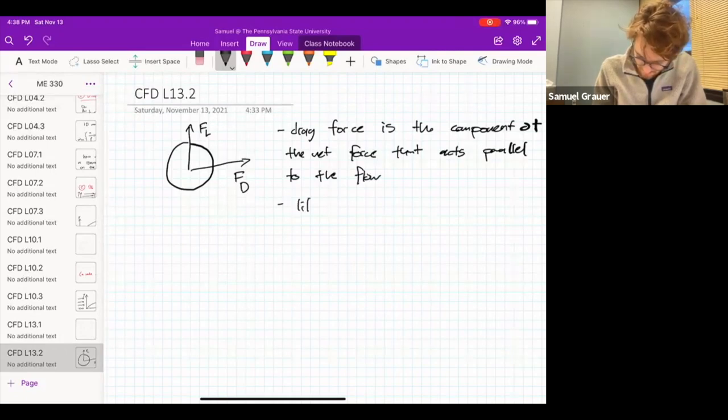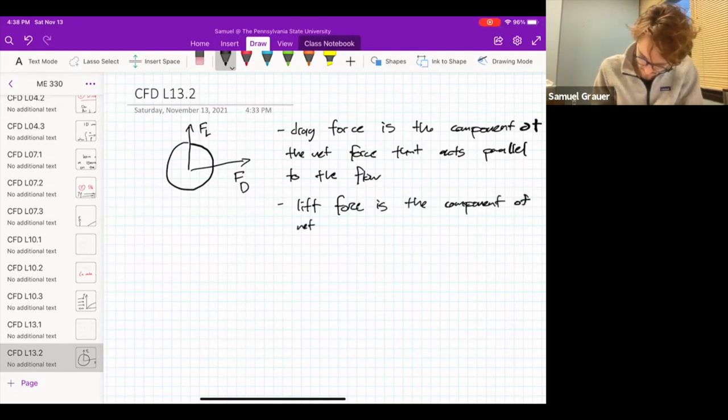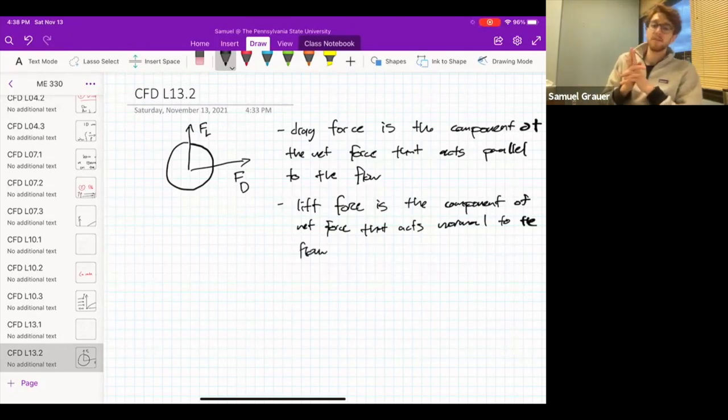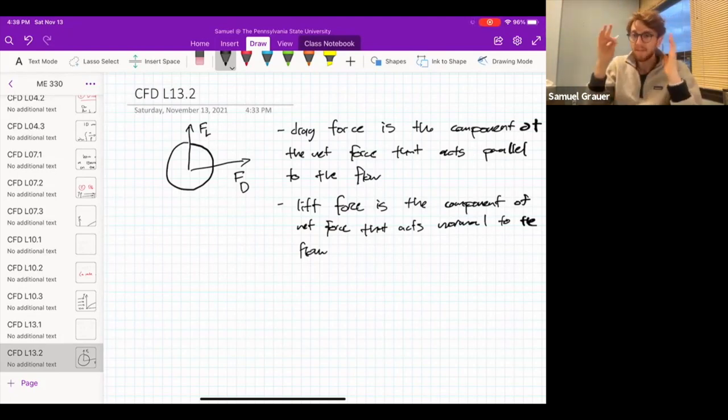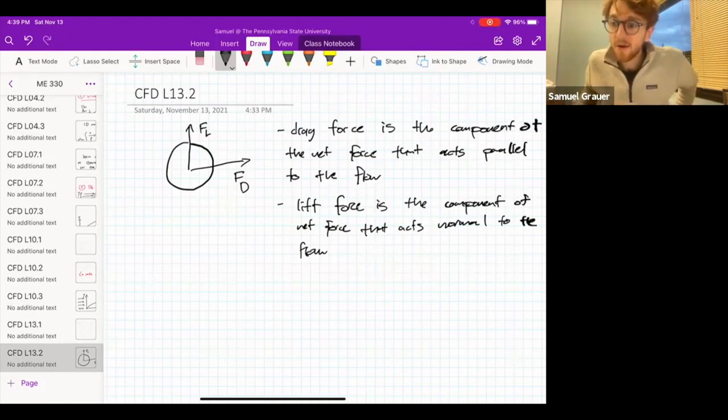And the lift force is the component of force that acts normal to the direction of flow. So you can think, add up all of the forces acting on this body, you can resolve that into one net force vector. And you would do that by integrating the pressure field over the surface area. And then you can take that vector and break it up into components that are aligned with the flow and components that are orthogonal to the flow. Stuff that's aligned with the flow is drag. Stuff that is orthogonal to the flow is going to be lift. And we're going to deal with lift later in the course when we discuss airfoils. But for now, we're going to focus on the drag force.